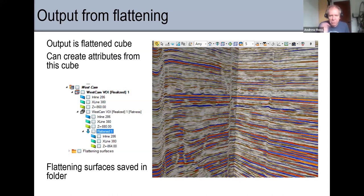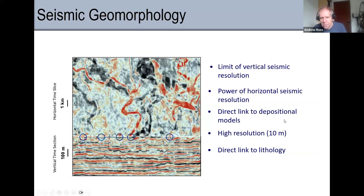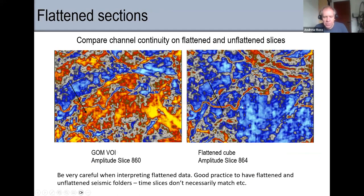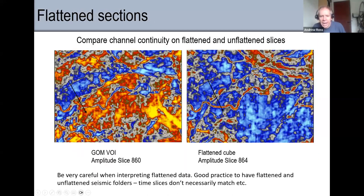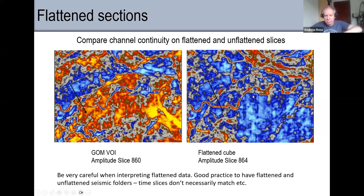Here's an example from Petrel — we've picked a horizon and flattened it. Once I've done that, you can see there's a channel here going from red to blue. On the original time slice it's a bit messy, but if I flatten the cube on a horizon, the channel becomes a lot clearer — you can see it's red all the way through and then it goes somewhere. I also get rid of the half-blue, half-red split across the image.